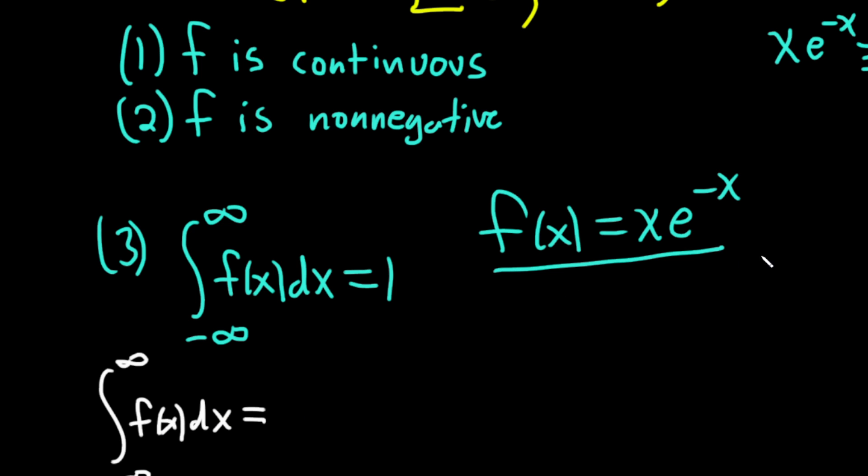Now, our function's only defined on this interval here, zero to infinity, so the rest of it's not going to matter. So this is basically just from zero to infinity of x e to the negative x dx. The rest of it doesn't even exist, right? There's not going to be any function there. It'll just be zero.